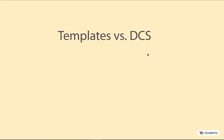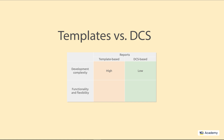So I get much better functionality and flexibility than with the template-based report. And how many lines of code did I write? That's right — none. So this is how the template-based reports differ from the DCS-based ones. In terms of development complexity, the template-based report loses hands down. As for the functionality and flexibility, the DCS-based reports win again.